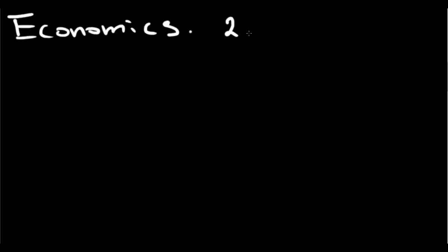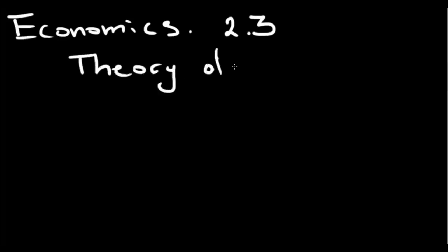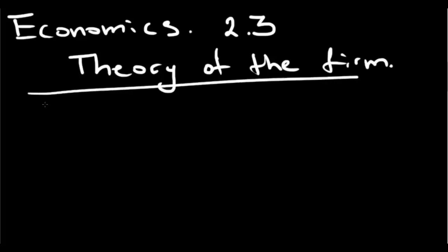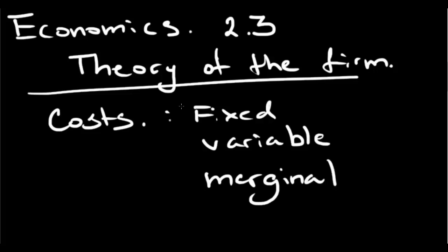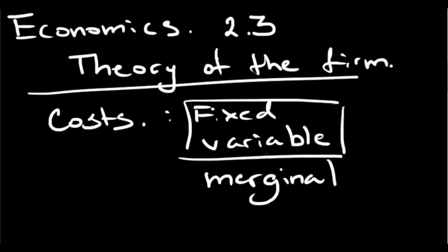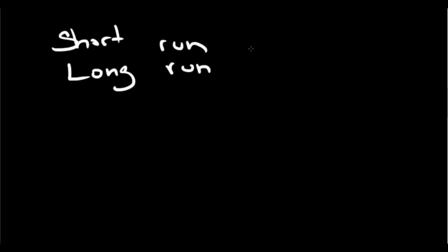It is now time for economics. We're going to start with 2.3, which is Theory of the Firm. In this brief video we're going to be talking about costs — different kinds of costs, which are fixed, variable, and marginal. We're going to cover fixed and variable for now, and save marginal for the next video. After that, we're going to be talking about the short and the long run, which are periods of time.